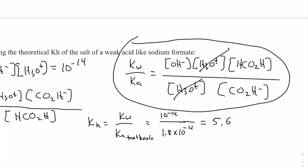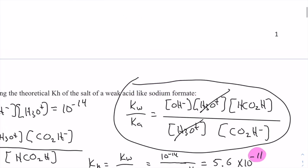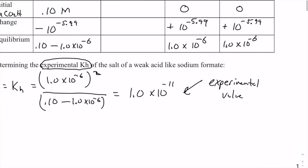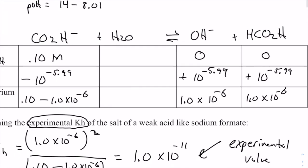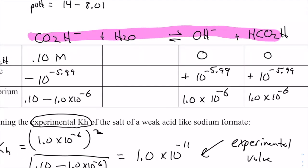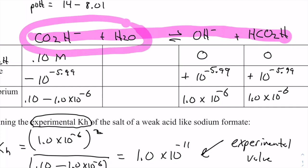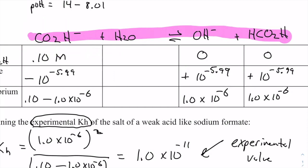So the hydrolysis constant equals 5.6×10⁻¹¹. Now think about this value — 10⁻¹¹ is very, very small. So this reaction is not going to occur a lot; we're mostly going to see the left side at equilibrium.